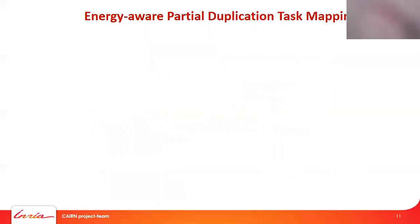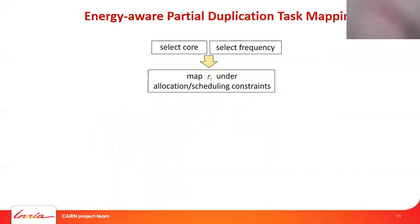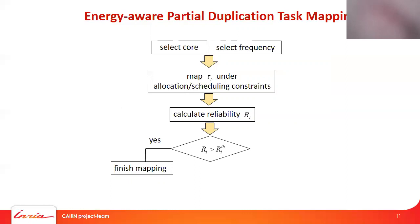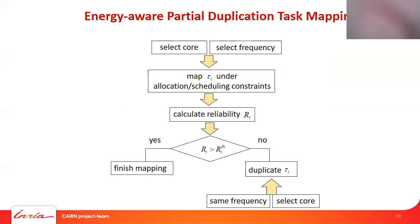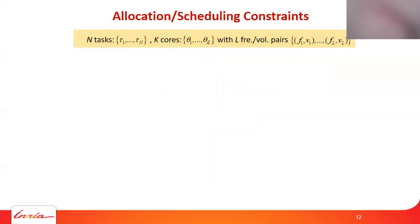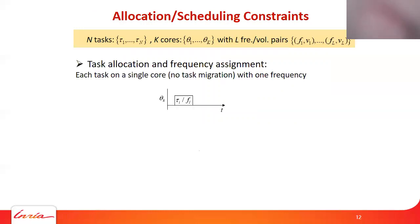We assume that each core has a hardware error detection mechanism. During the process of mapping each task, we select which core and which frequency to execute the task on. When the frequency is assigned, the reliability of this task is compared with its reliability requirement. If it satisfies the requirement, the mapping of this task is finished. If not, a duplication task is executed on a different core with the same frequency. For task mapping, we need to solve two problems: task allocation and frequency assignment.